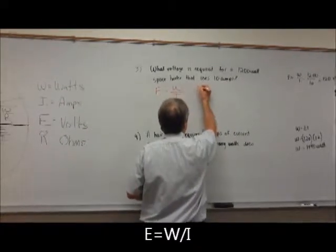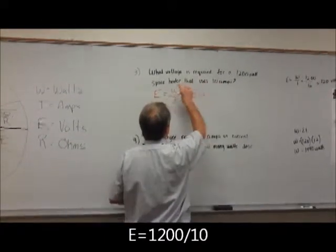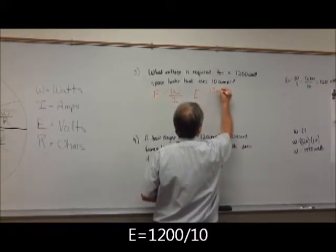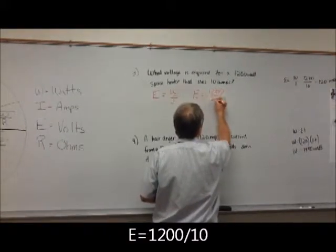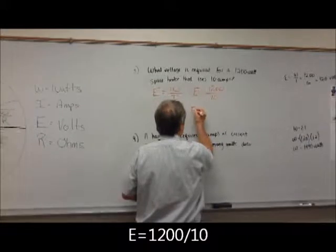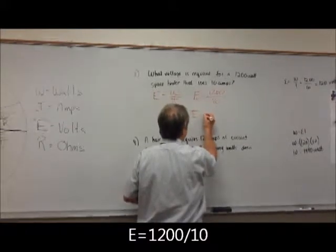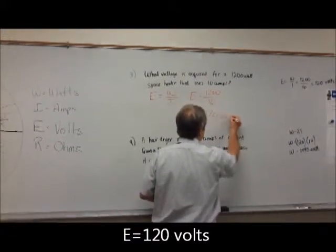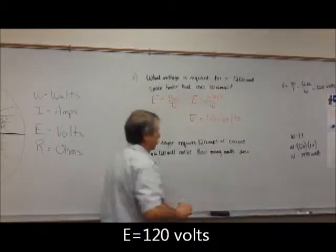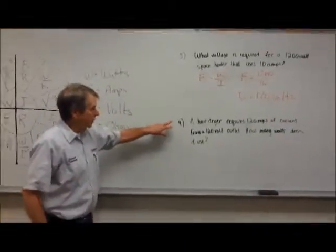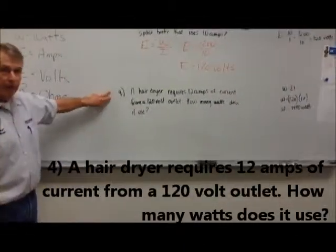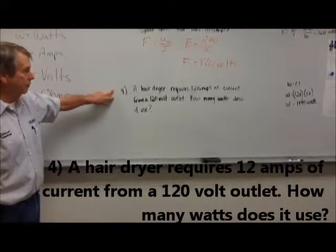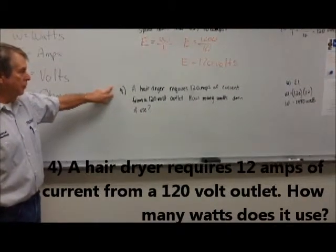E is going to be equal to 1200 watts divided by 10 amps. So E is equal to 120 volts.